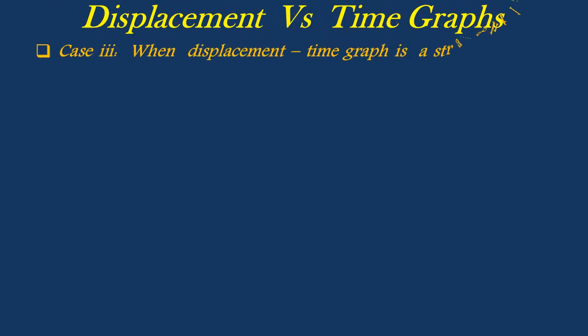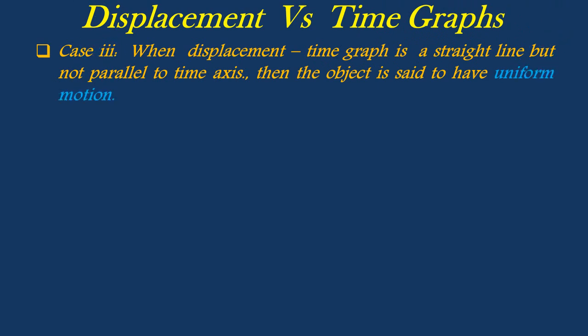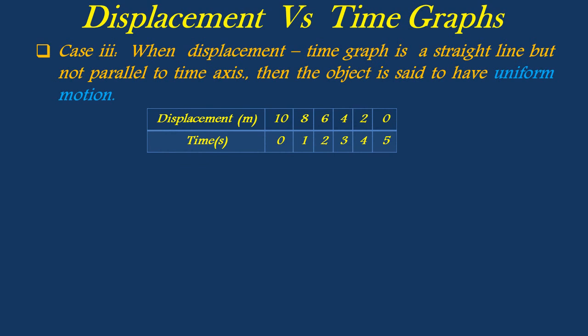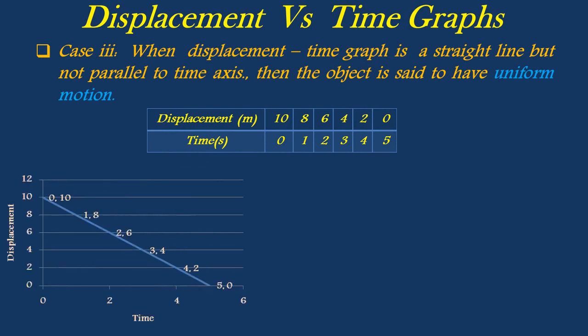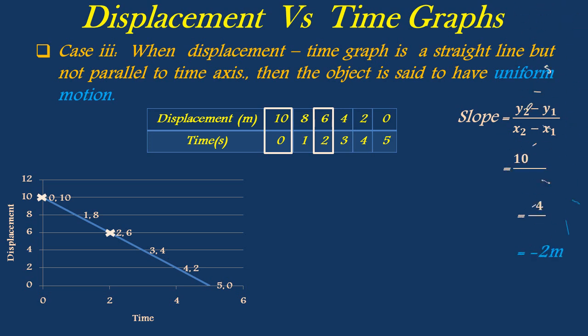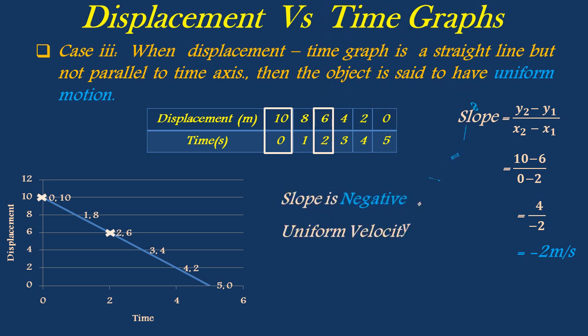When the displacement-time graph is a straight line but not parallel to the time axis, the object is said to be moving with uniform motion. The following table shows displacement-time values for an object moving along a straight path. By taking displacement on the y-axis and time on the x-axis, a graph is plotted. To obtain the slope, we consider points 10,0 and 6,2, using the slope formula (y2 minus y1) divided by (x2 minus x1), which gives slope as minus 2 meter per second. The displacement is decreasing with respect to time, so slope is negative. The object is moving with a uniform velocity of 2 meter per second in the negative direction.